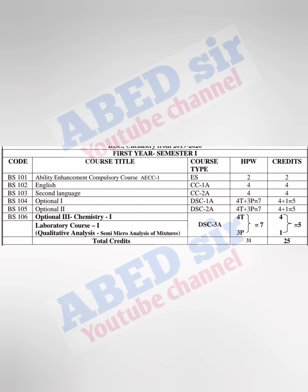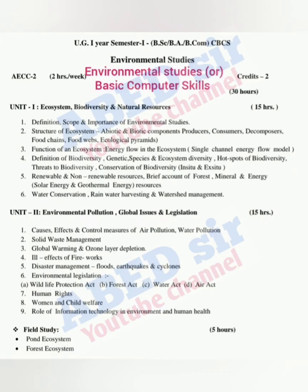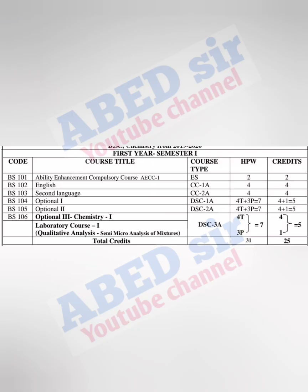Next we have the AECC paper. Here 2 subjects are there; out of these 2 subjects you can select any one: Environmental Science or Basic Computer Skills. 2 classes per week for this subject and 2 credits. Once you qualify this subject you will get this credit. Semester exam duration is 1 and a half hours, that is 90 minutes, and maximum marks for this subject is 50, out of 50, 40 for semester exam and 10 for internal exam.